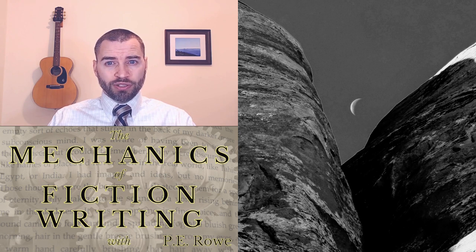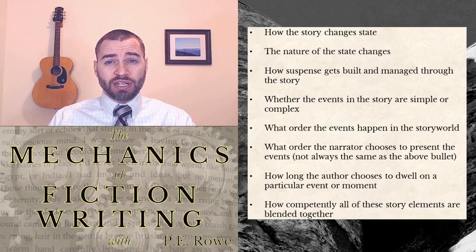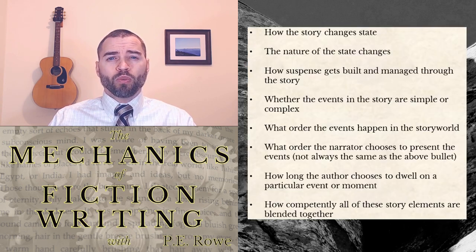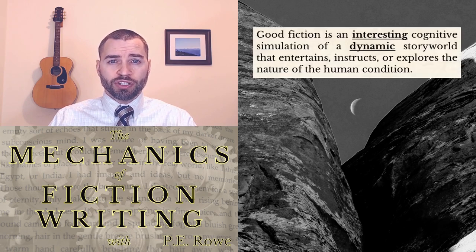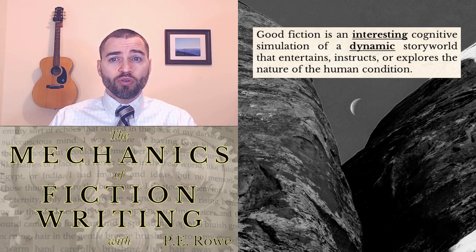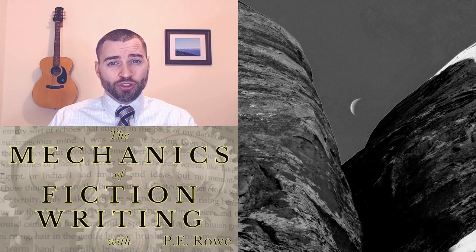But one thing we are not going to do is make any attempt to define plot, because really, we're talking about at least five distinctly different aspects of written narratives, and probably more. One thing we can do, though, is make use of our story definition to guide us toward what a writer is trying to accomplish with plot. Our target words from the story definition are "dynamic" and "interesting." A good writer needs to make the story world move, and he needs to do so in a way that grabs the reader's attention. This is fundamentally what plot is all about. With that said, let's get your story moving.